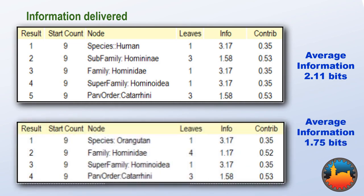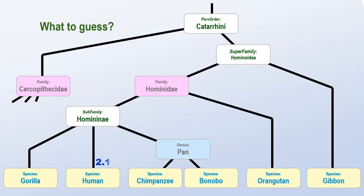If, on the other hand, our guess had been orangutan, then the average information delivered would be 1.75 bits. Each guess we could have made has its own average information delivered. Hence, in this situation, the guess that gives us the most information would be either chimpanzee or bonobo.